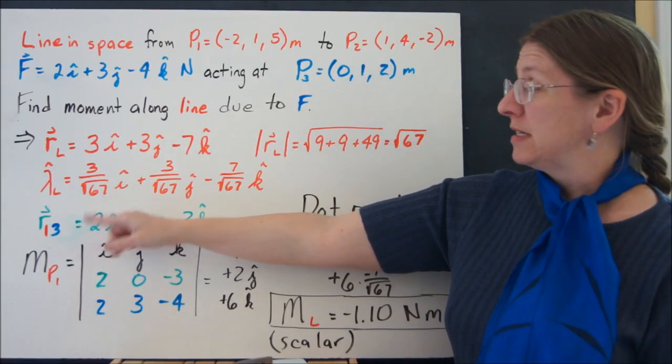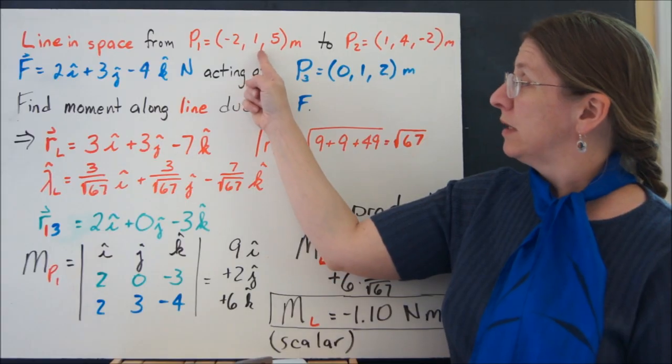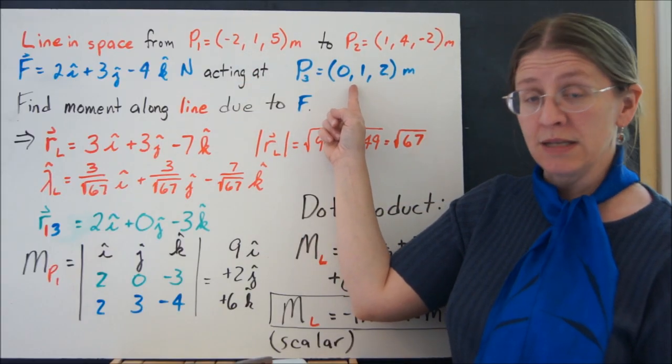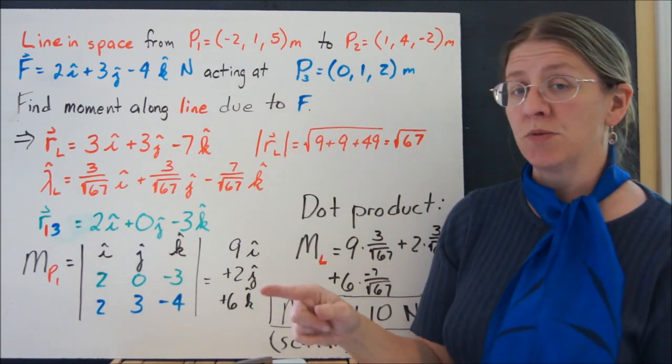My position vector now is not along the line. It goes from this point to that point. That's like the R I had a minute ago: 2i minus 3k.